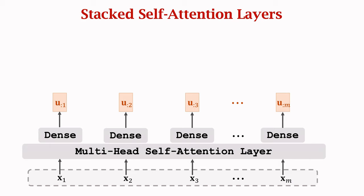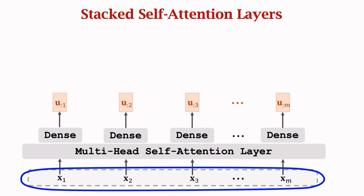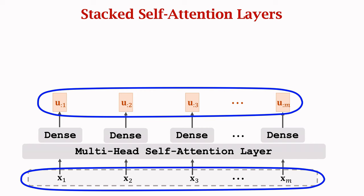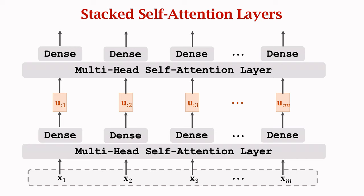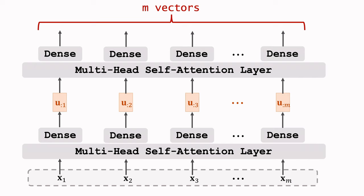We have built two layers: a multi-head self-attention layer and a dense layer. If the inputs are m vectors x1 to xm, then there will be m output vectors u1 to um. Note that an output vector ui depends not only on xi but also on all m input vectors. A change of any input vector x will change all the output vectors u1 to um. We can build a second multi-head self-attention layer and dense layer, and stack as many layers as we want. In this way, we build a deep network for processing a sequence of vectors. The number of vectors m can be arbitrary, and the output sequence has the same length as the input.